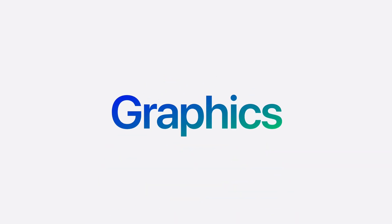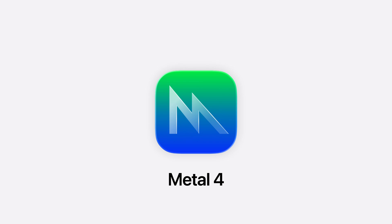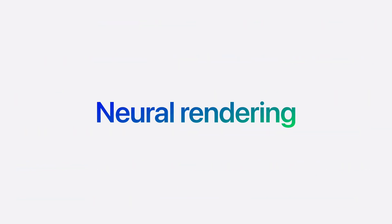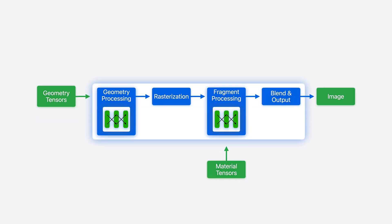The key graphics technology powering these experiences is Metal. Ten years ago we brought Metal to the Mac, and since then we've been adding capabilities to power the most advanced graphics workloads. Now we're introducing Metal 4 with tons of new features to support the most advanced graphics and ML technologies, like neural rendering, which combines traditional graphics with machine learning inference. With Metal 4 you can now run inference networks directly in your shaders to compute lighting, materials, and geometry, enabling highly realistic visual effects for your games.